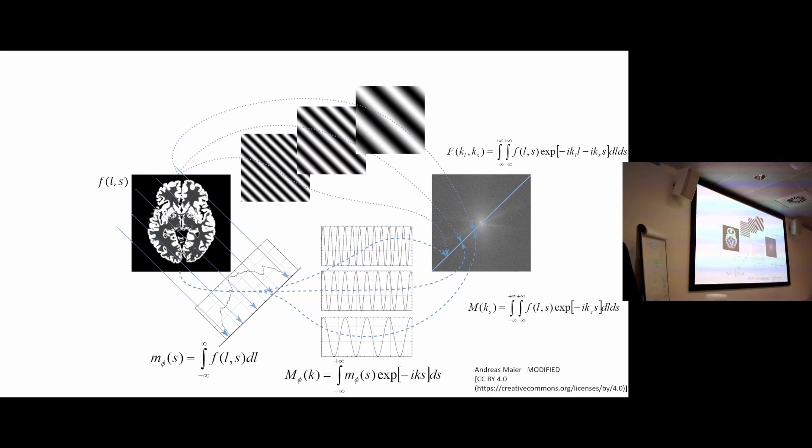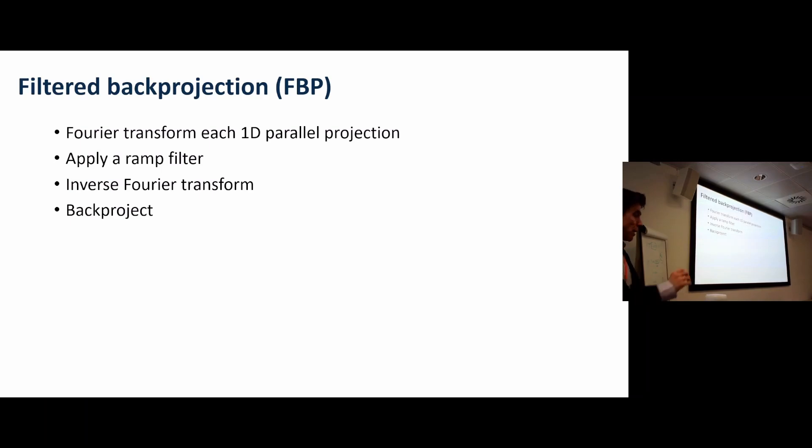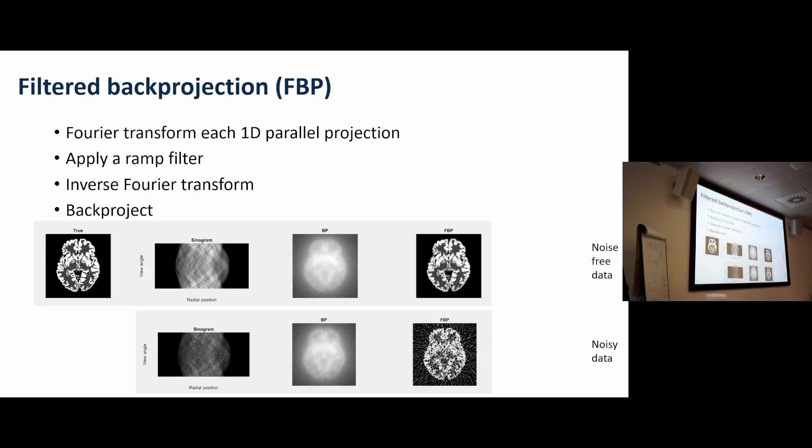Filtered back projection: Fourier transform each parallel projection, apply a ramp filter, inverse Fourier transform, back project. If you do it with MATLAB, MATLAB already has an iradon, inverse radon function, which you'll be using on Thursday.